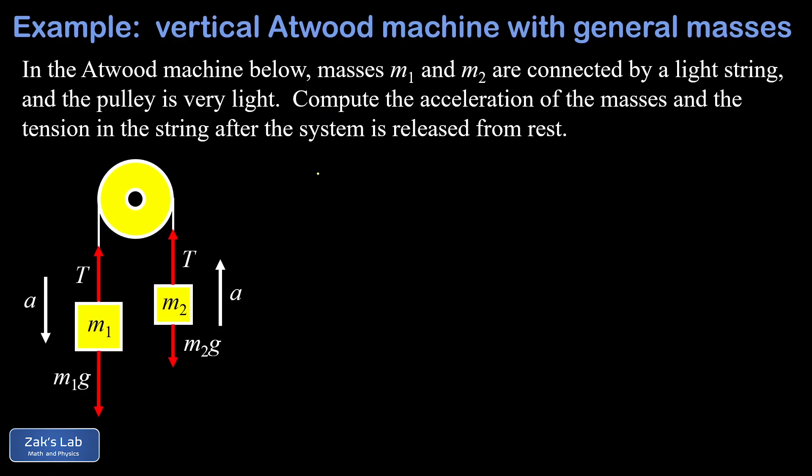Now we apply Newton's second law to each moving piece of the system. We'll start with m1 and write down that F net equals ma. We're using downward as positive for this mass because we're imagining that's the heavier mass and it's accelerating downward. To write down the net force I have a positive m1g and a negative T.